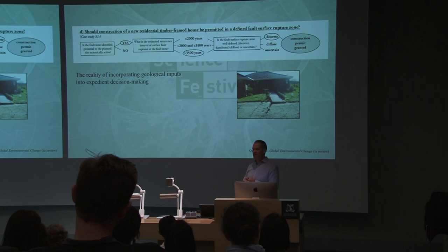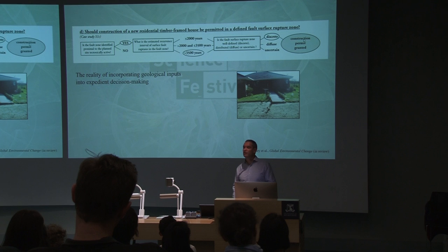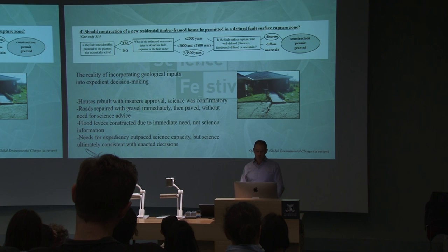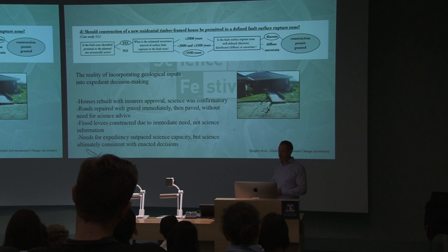We could not keep up with the decisions that were being made. The decision tree for a new house looks something like this: Is the fault zone active? Yes. What's the recurrence interval? Greater than 3,000 to 3,500 years. Is the zone discrete? Yes. We'll issue a construction permit, because the recurrence interval is so long that in the lifetime of that house it's very unlikely they'll get another event. The reality is, though, that the houses were already rebuilt right on top of the fault zone, because the insurance companies were happy to just go ahead. The roads were repaired immediately with gravel — they didn't need science advice to repair the roads. Flood levees were constructed because farmers didn't want rivers flowing through the paddocks. There was a real need for expediency that outpaced science capacity.